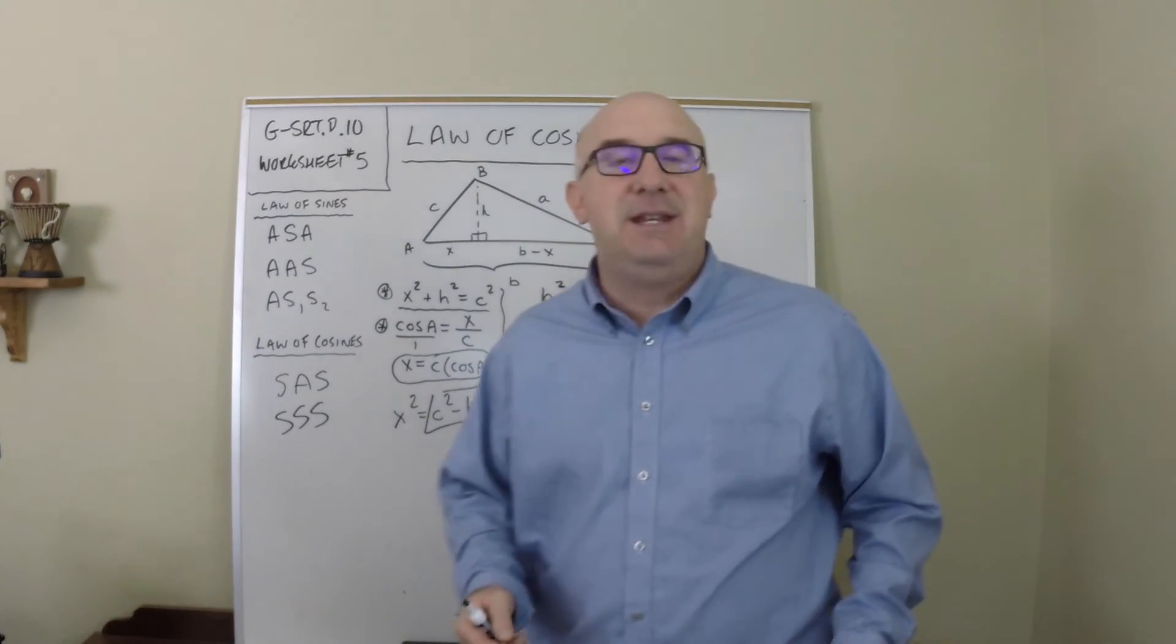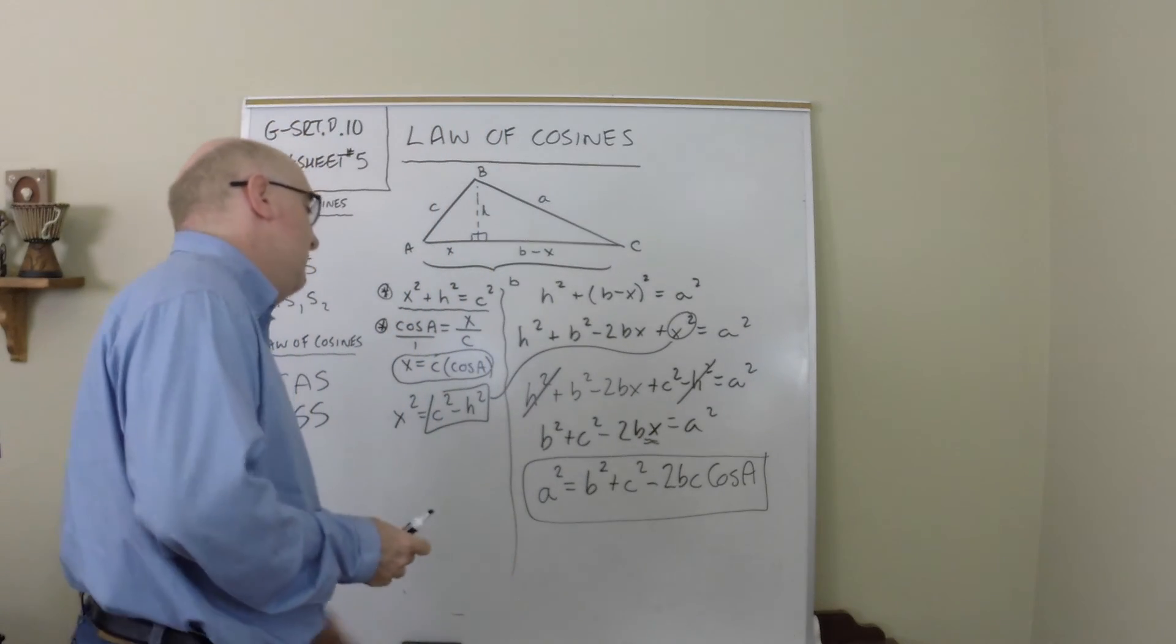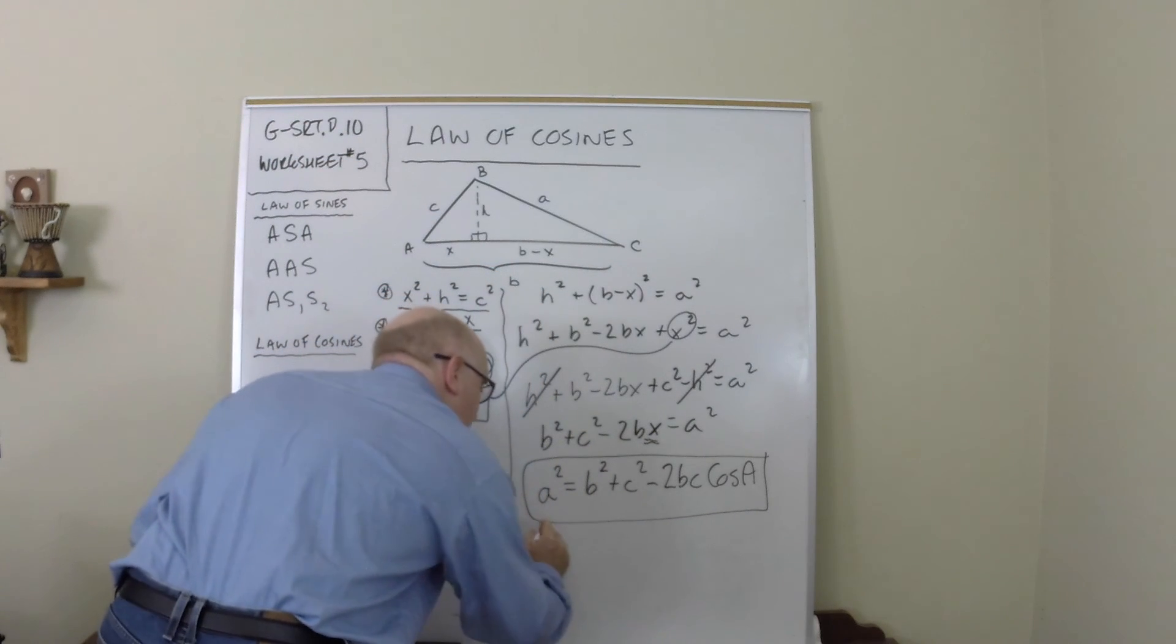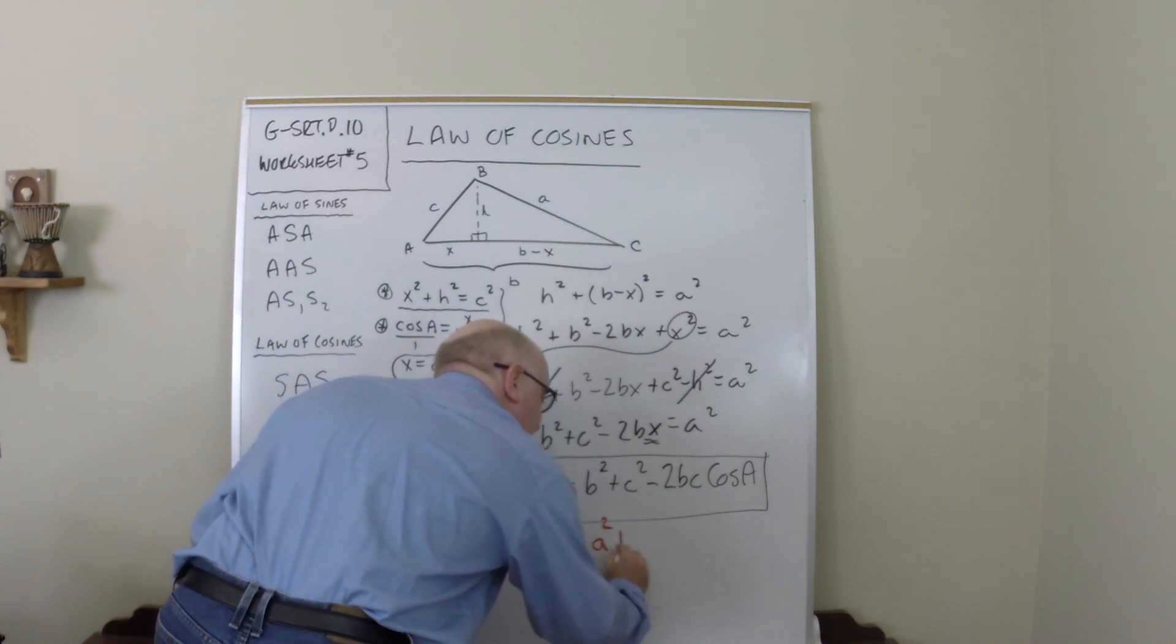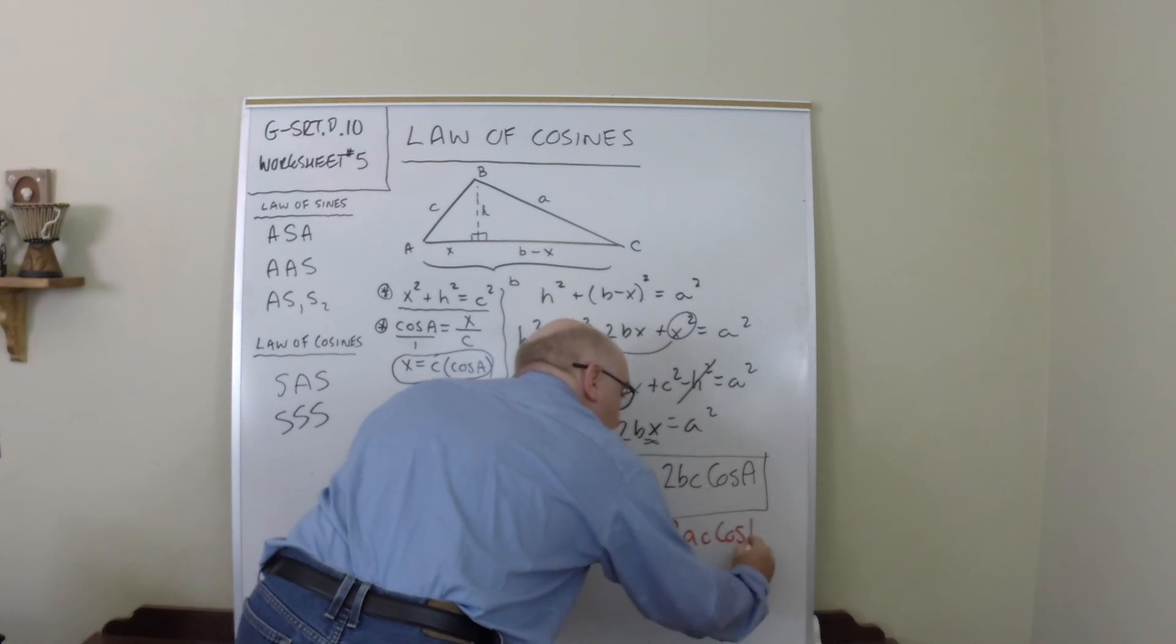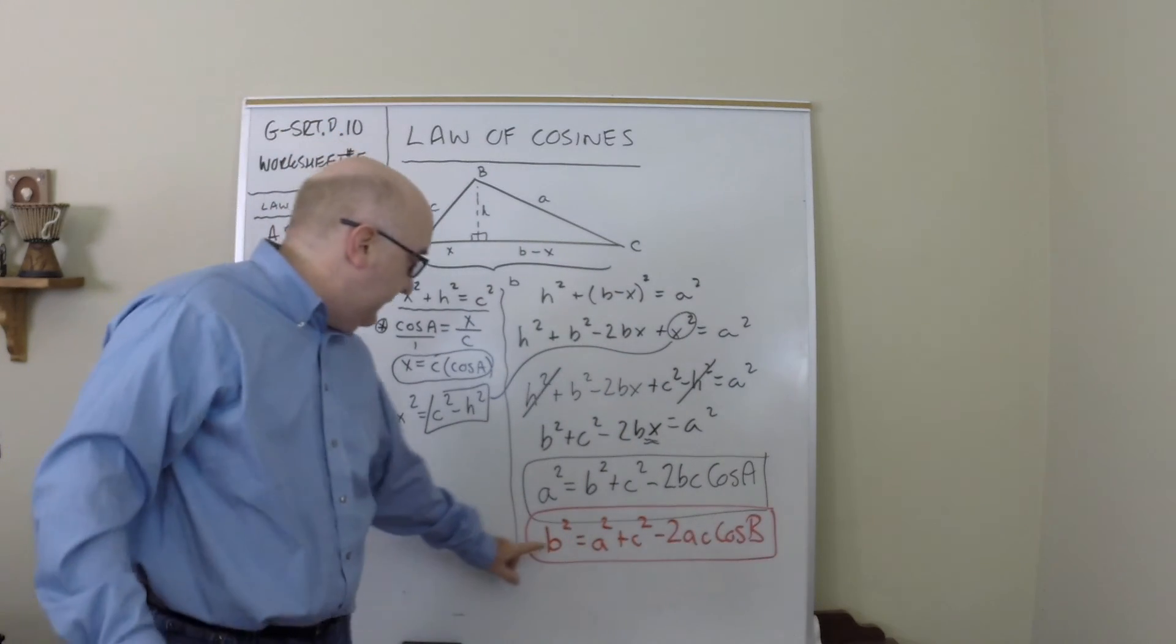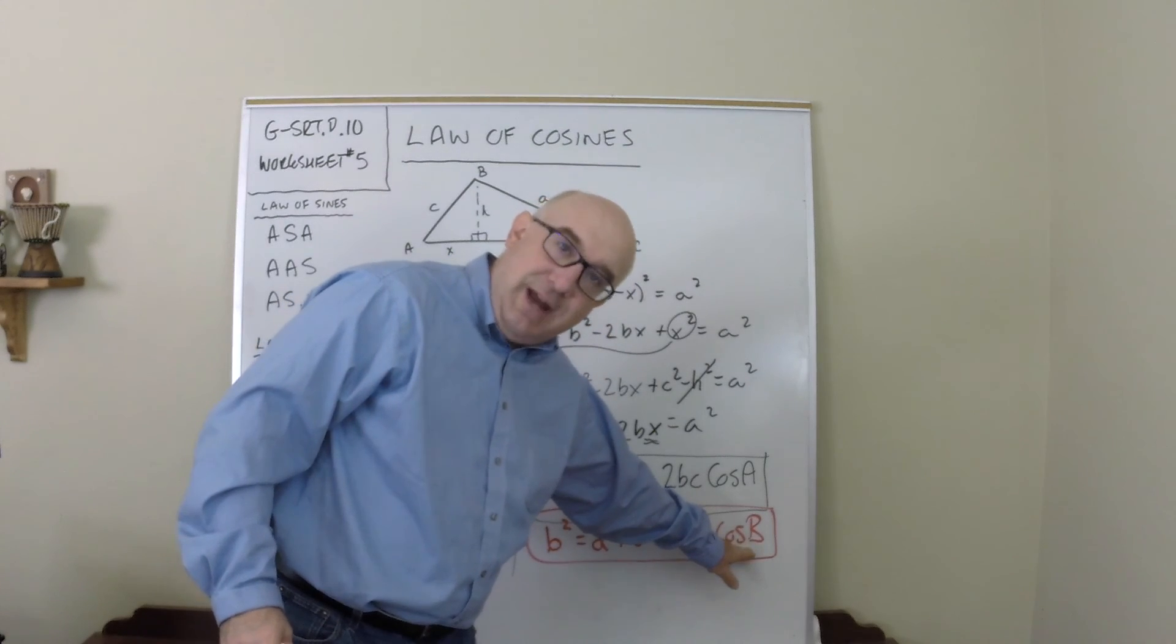Now the a, b, and c are somewhat I'd say arbitrary in that if you were solving for let's say side b, it would just do what you would expect. It would be b squared equals a squared plus c squared minus 2ac cosine of b. Do you see how it adapts there?